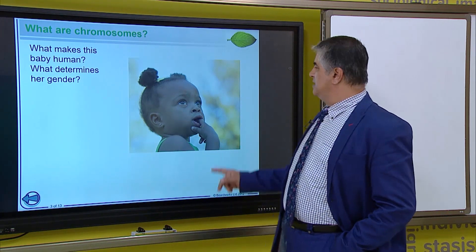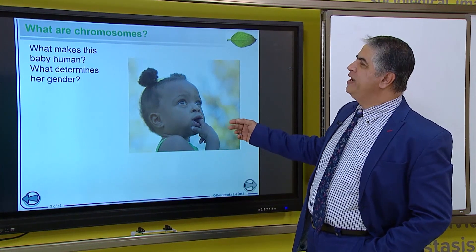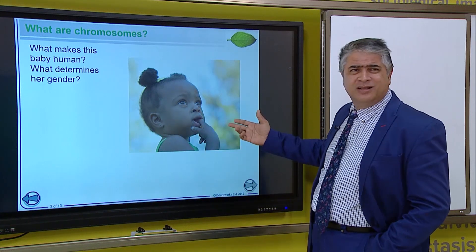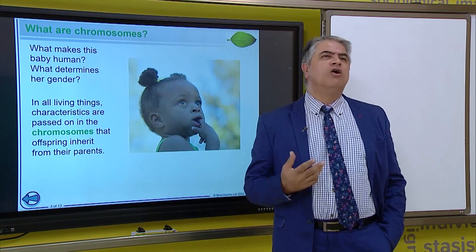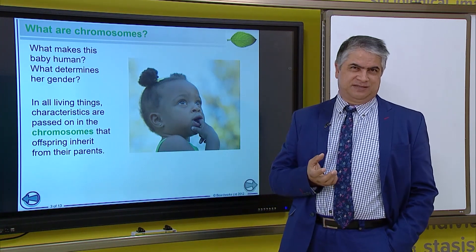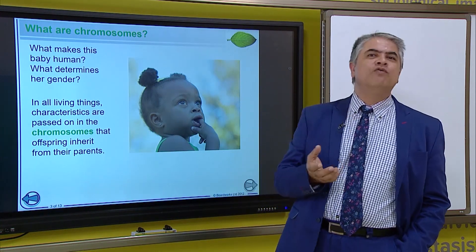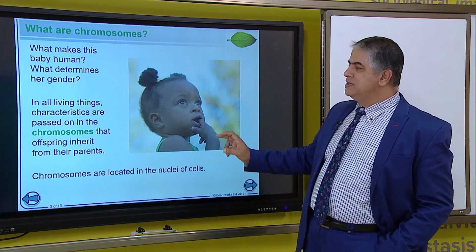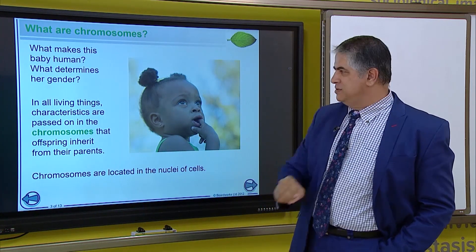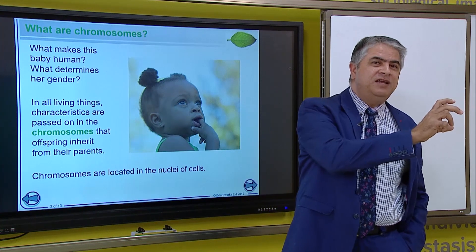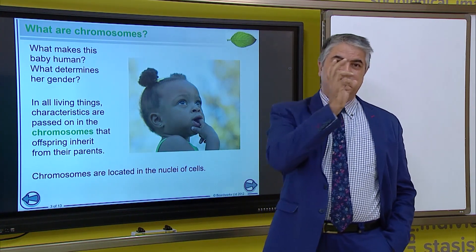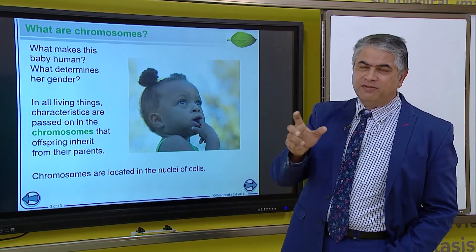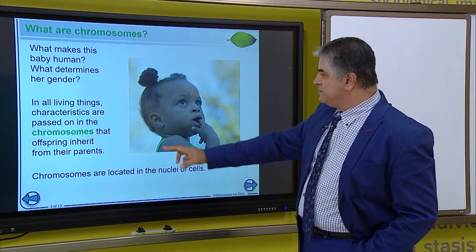What is a chromosome? This little baby. We need to understand what makes her human. We need to understand why is she a girl. All living organisms have characteristics. Now, these characteristics are passed over from the parent to the child. And in humans, there are 46 chromosomes. 23 of the chromosomes are given from the parent to the child by the mother. And 23 are given from the father to the offspring, which is the baby.